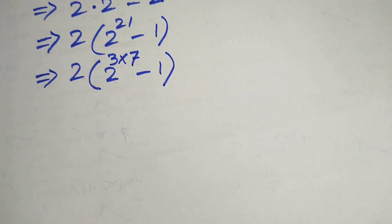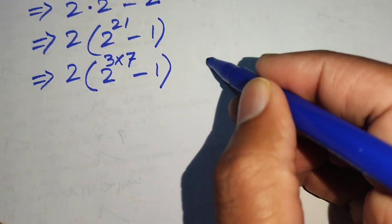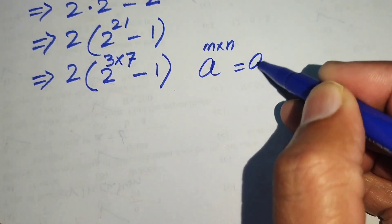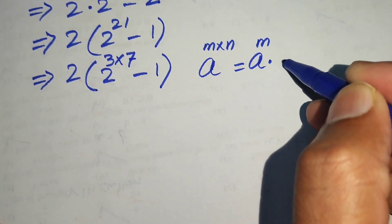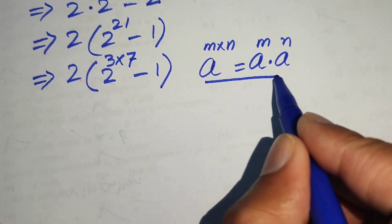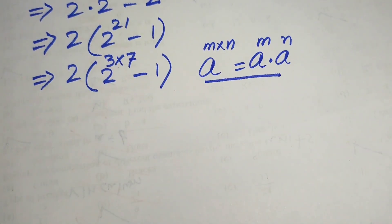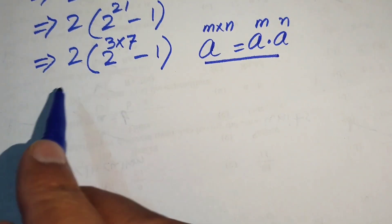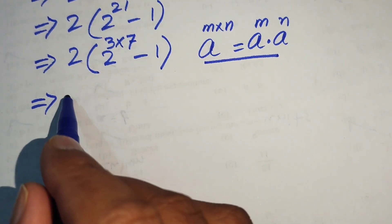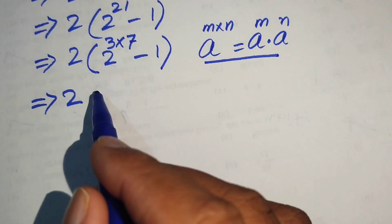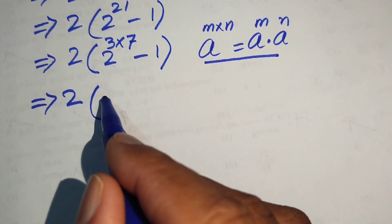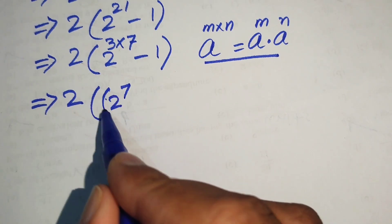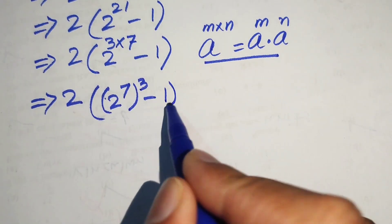We use another exponential law: a to the power of m times n equals a to the power of m, to the power of n. According to this law, we break the exponent and write this as 2 to the power of 7, to the power of 3, minus 1.